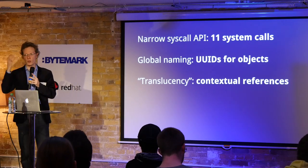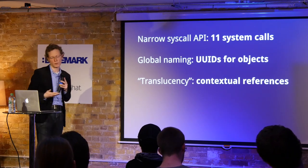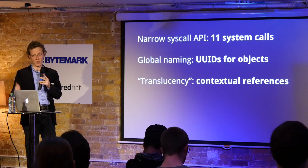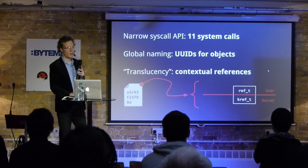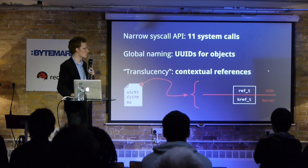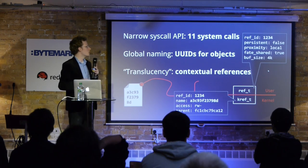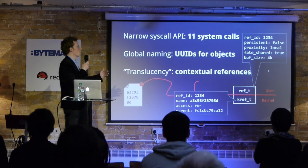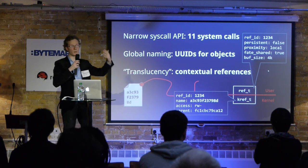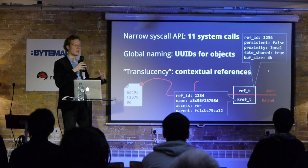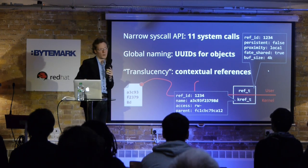Translucency basically means that when you interact with an object, you can either have its name or you can have a handle to it, which is called a reference — it's a bit like a reference in Java, but it's not a language-level reference. You give that to a system call as an argument, like a file descriptor. This object is represented in the kernel as a kref, which is sort of the private part of the reference, but it also exposes some properties to user space — that's why it says 'contextual.' There's some information only the kernel can see, but also some information exposed to user space: useful things like, is this object on persistent storage? What is its proximity — is it on the same machine or across the network? Does it share its fate with the task that's accessing it? What is the right buffer size? You don't have to know this — you can treat objects as completely transparent — but you might get non-deterministic performance because you don't actually know what it is you're talking to.